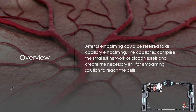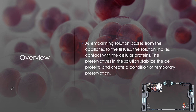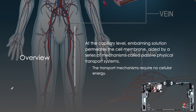Arterial embalming could be referred to as capillary embalming. The capillaries comprise the smallest network of blood vessels and create the necessary link for embalming solution to reach the cells. As embalming solution passes from the capillaries to the tissues, the solution makes contact with the cellular proteins. The preservatives in the solution stabilize the cell proteins and create a condition of temporary preservation. At the capillary level, embalming solution permeates the cell membrane aided by a series of mechanisms called passive physical transport systems. The transport mechanism requires no cellular energy.